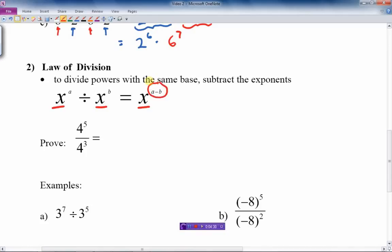Well, let's look at the example here. If I have 4 to the 5th, 4 to the 3, what does that mean? That means 4 times 4. Well, there's 5 4's on top multiply together. On the bottom, there is 3 4's.